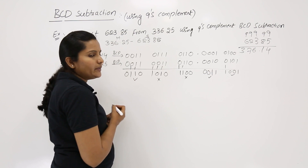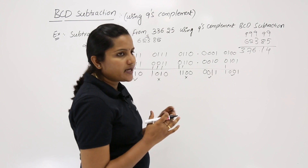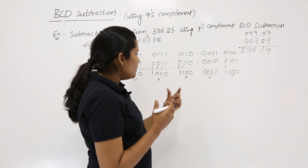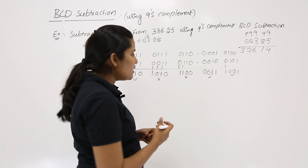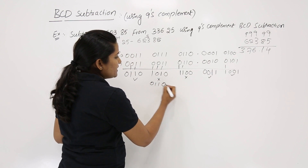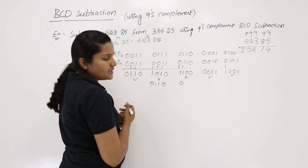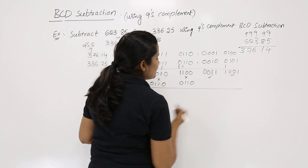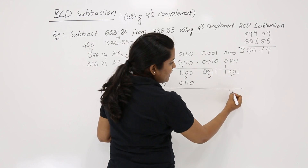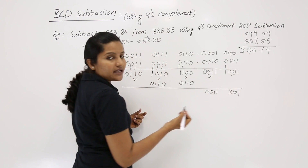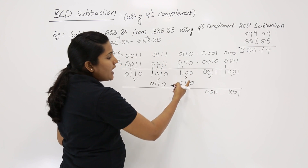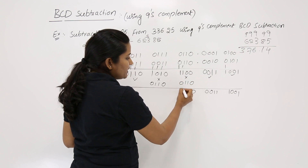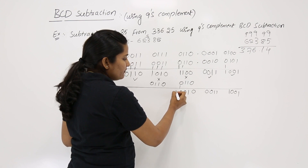In the next step, after identifying valid and invalid digits, we correct the BCD addition result by adding 6 to the error bits only. We have 2 bits in error, so we add 6 to those 2 groups. The non-error bits are taken as-is. For the first error group, adding 6 gives carries: 0+0=0, 0+1=1, 1+1=0 carry 1, 1+1=0 carry 1.